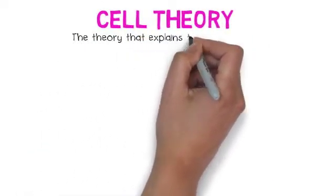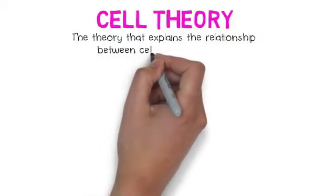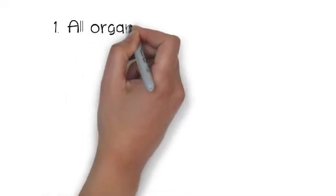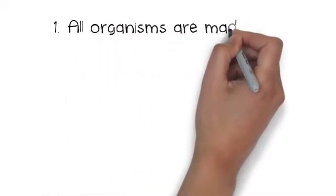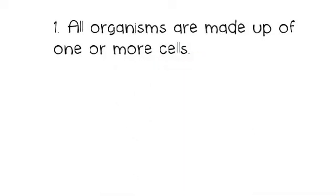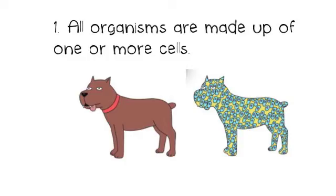Cell theory is a theory that explains the relationship between cells and living things or organisms. There's three basic tenets. The first one is: all organisms are made up of one or more cells, either unicellular or multicellular. Like this dog here, he's made up of many cells, which means he is a multicellular organism.